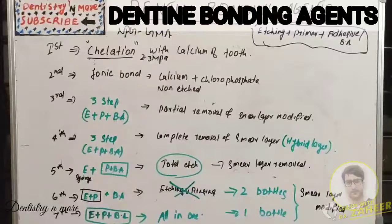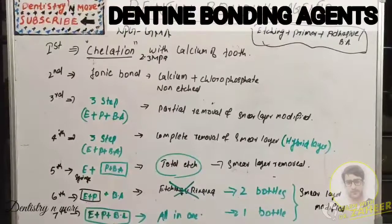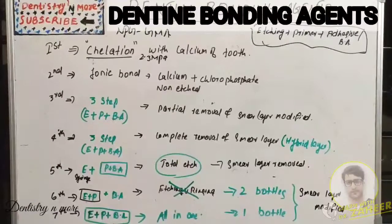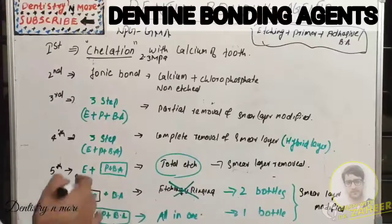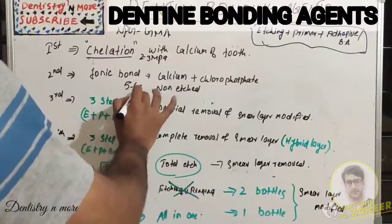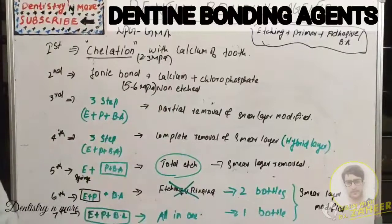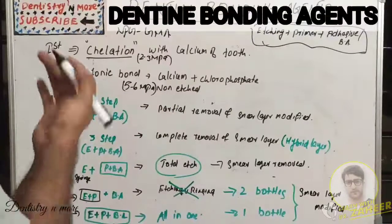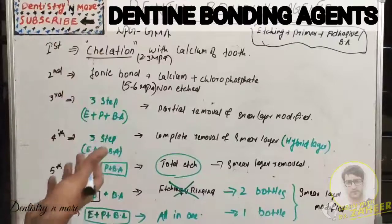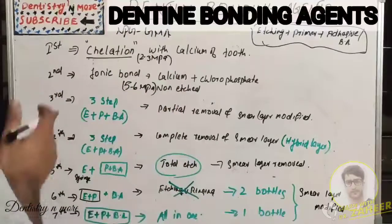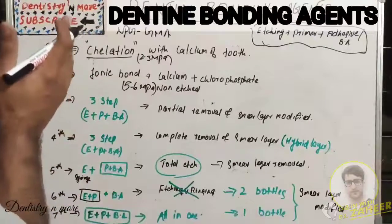The second generation was introduced in the 1970s and attempted to bond chemically to either the inorganic or organic components of dentin. It produced limited bond strength but comparatively better than the first generation, achieving 5-6 MPa. Materials tried included halogen phosphoric acid esters of BisGMA, NPG-GMA, or phenyl-P. Examples include Clearfil Bond System F, Scotch Bond, and Bond Light.